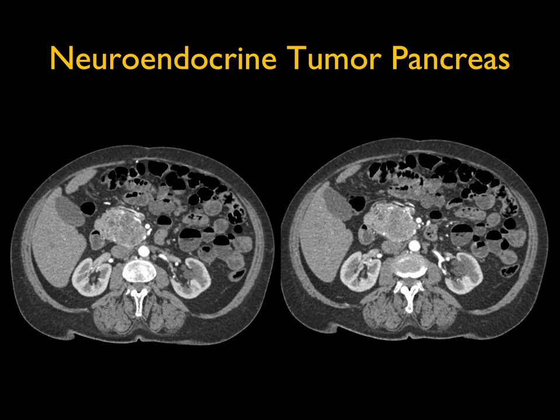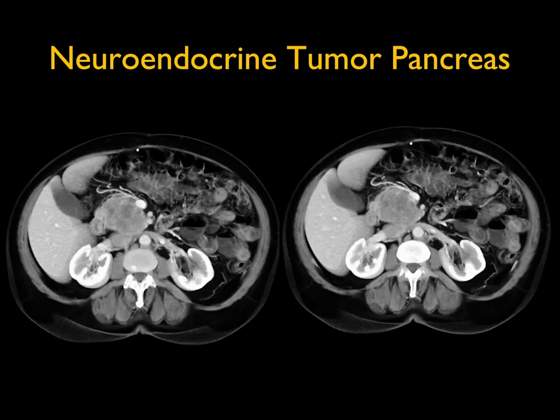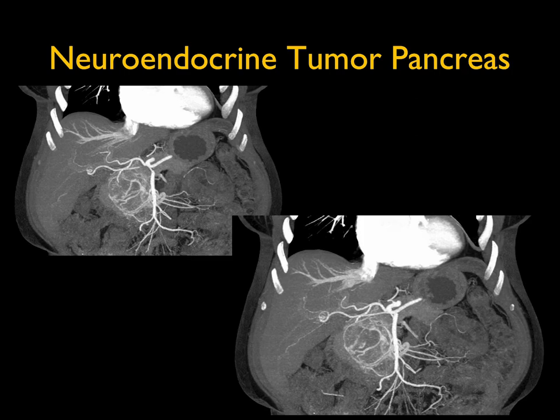Case six: a solid lesion in the head of the pancreas with vascularity. There's no dilated duct — it's solid with some increased vascularity. That changes your differential from adenocarcinoma, which is the first thing we think about in pancreatic masses, to a neuroendocrine tumor. Neuroendocrine tumors can be very vascular or mildly vascular, or at times hypovascular. They can be focal at one centimeter or larger, and can stretch or invade vessels. The celiac and SMA appear patent but there's increased vascularity.